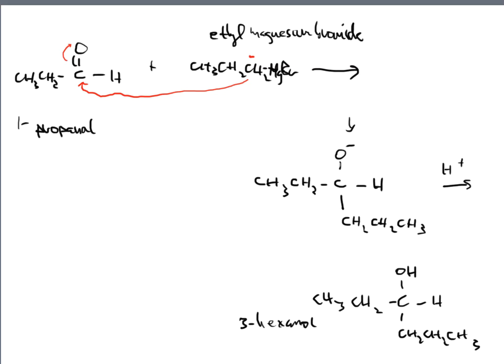Other things we can discuss: what type of alcohol is that? Is it primary, secondary, or tertiary? That OH group is on a carbon attached to two other carbons — one on each side. So that means this is a secondary alcohol. There's a review of even the classifications of the different types of alcohols.